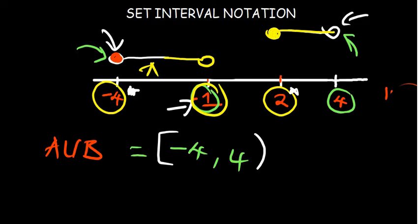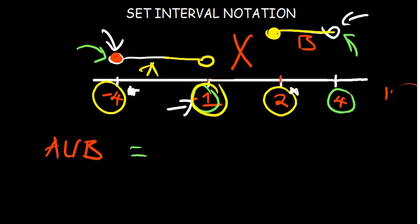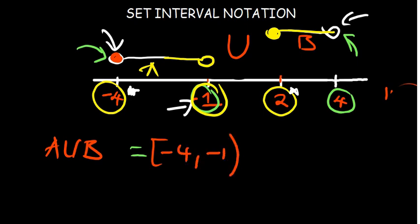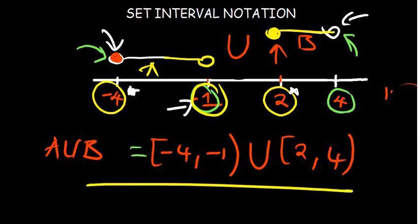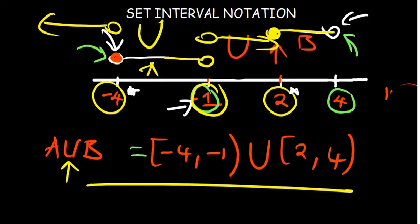If set B ends at two and they want the union of two sets with no intersection, we cannot just get the endpoints because that would include the missing region. In such a case we put a union in between. Our answer will be: set A moving from negative four where negative four is shaded up to negative one where negative one is not shaded, combined using union, and then from two which is shaded all the way up to four where four is not shaded. This is the representation when there is a gap with no intersection, and this is essentially what we use when finding the complement of a set where the complement goes to both sides combined with a union.